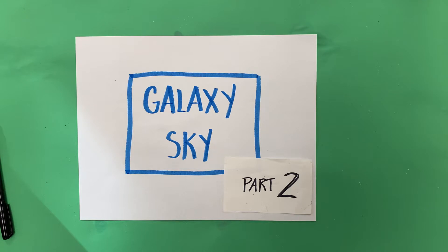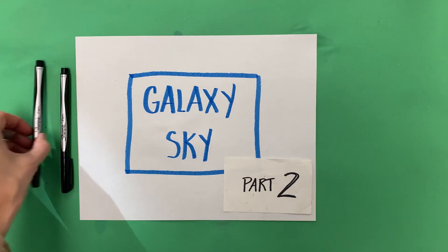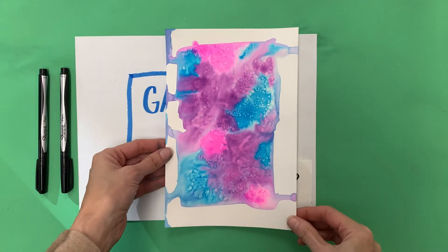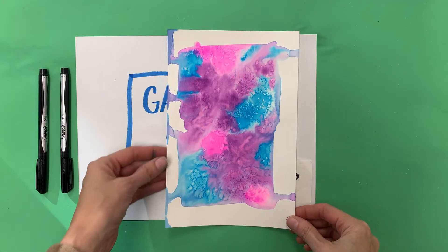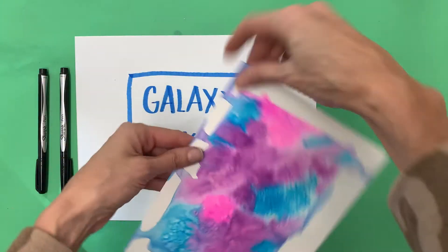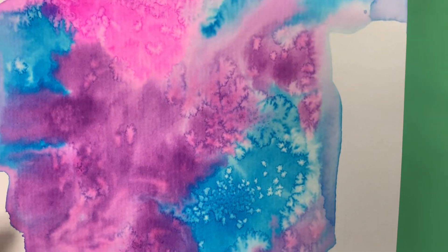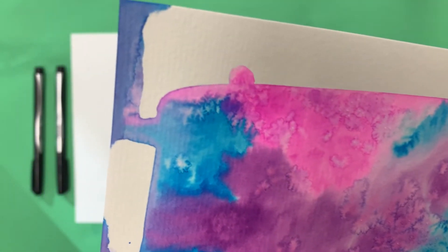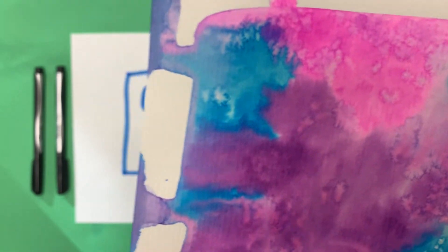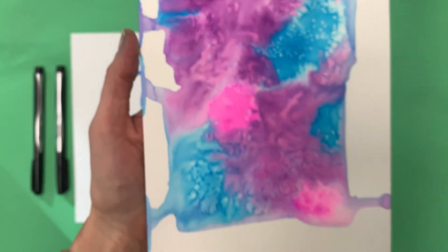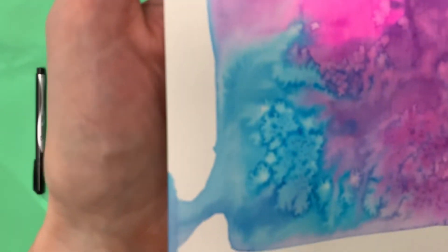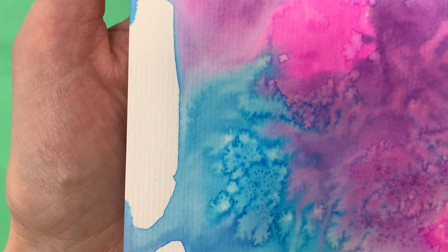Galaxy sky part two is coming up right now. As promised, I'm going to show you the outcome of our galaxy skies that we finished last time we were together. Check this out, here is the first one that we did with watercolor. Take a look at these sparkles. The salt that we sprinkled on there pushed the paint away so there's a little less pigment in those areas. Look at that, isn't that neat?